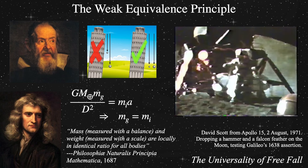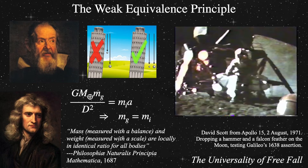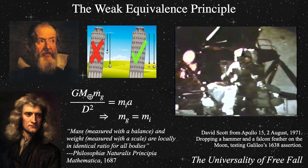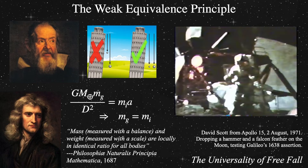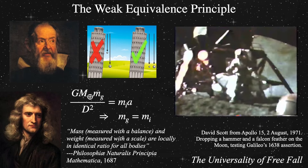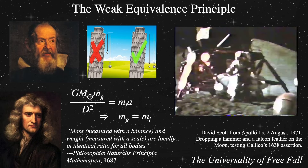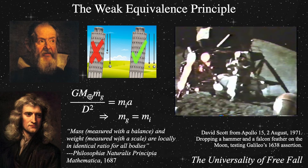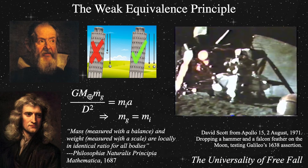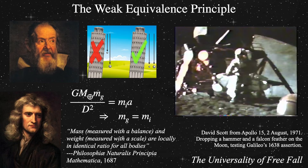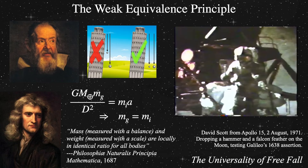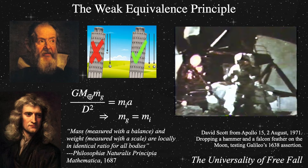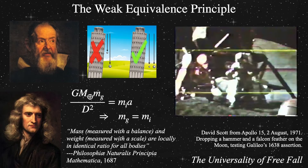Sometime around 1590, Galileo Galilei, while he was a professor of mathematics at the University of Pisa, was said to have dropped unequal weights of the same material from the Leaning Tower of Pisa. Being a generally grumpy guy, he wanted to disprove Aristotle's theory of gravity. Aristotle wrote that objects fall with a speed proportional to their mass, and Galileo was nearly certain it was false. Primarily, Aristotle hadn't done any actual experiments, but just logicked it out.